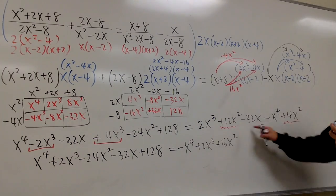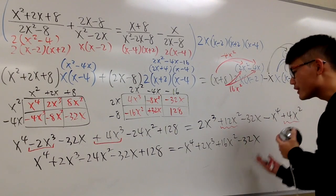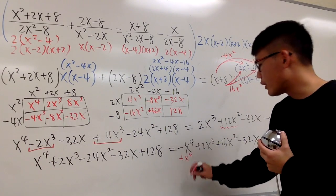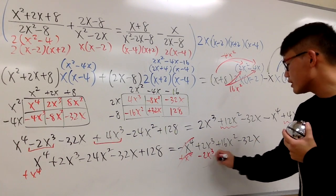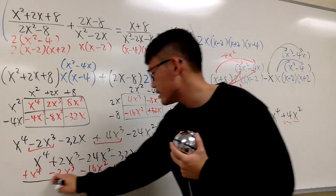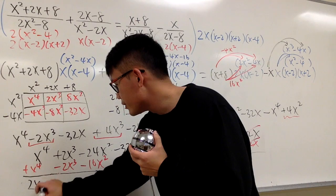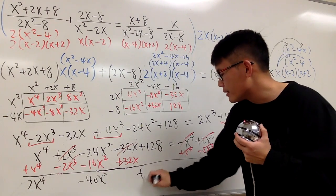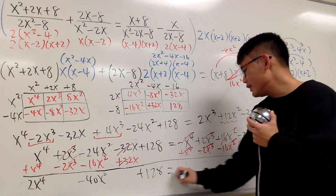This is equal to... Now, we are going to move everything from the right-hand side to the left-hand side. Just add the x to the fourth power. We're going to minus 2x to the third power, subtract 16x squared, add 32x. Let me just draw this. 2x to the fourth power. We will have negative 40x squared. And we bring this down, plus 128. This is equal to zero.